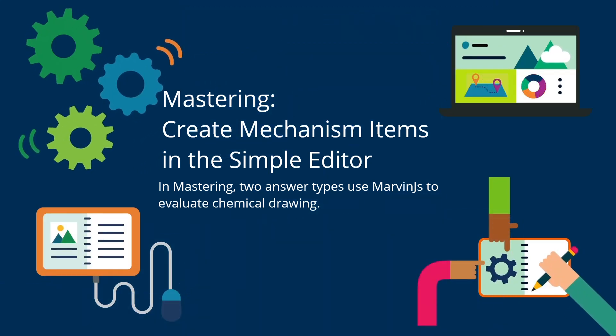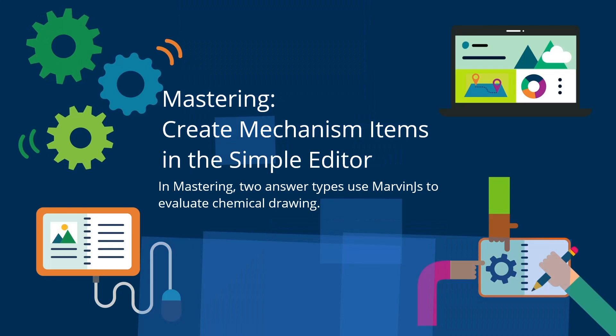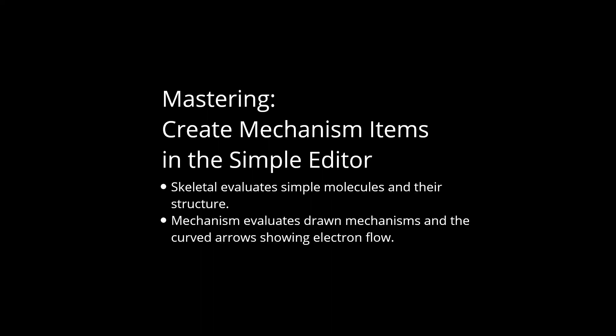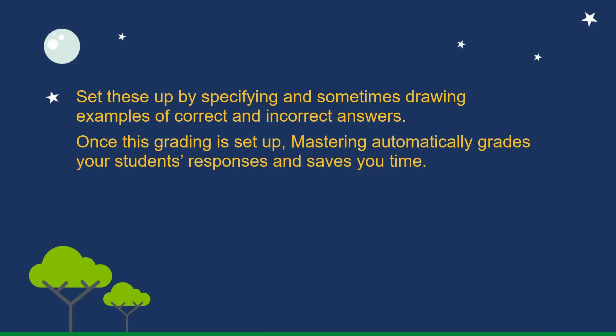Mastering Marvin: create mechanism items in the simple editor. In Mastering, two answer types use MarvinJS to evaluate chemical drawing. Skeletal evaluates simple molecules and their structure. Mechanism evaluates drawn mechanisms and the curved arrows showing electron flow. Set these up by specifying and sometimes drawing examples of correct and incorrect answers. Once this grading is set up, Mastering automatically grades your students' responses and saves you time.